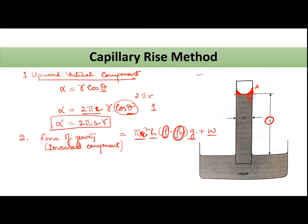So force of gravity is equal to πr²h(ρ - ρ₀)g plus w. Here, under normal circumstances, to make it more simplifiable, ρ₀ is basically neglected. w is generally neglected for most of the liquids. And you are also neglecting theta in the upward component. So aapka downward component kya ban jayega? πr²hρg. This is your downward component.